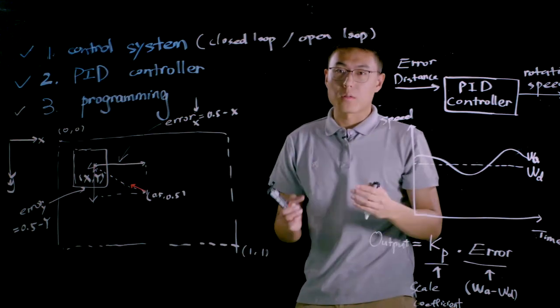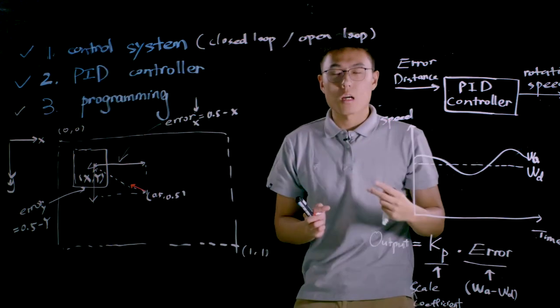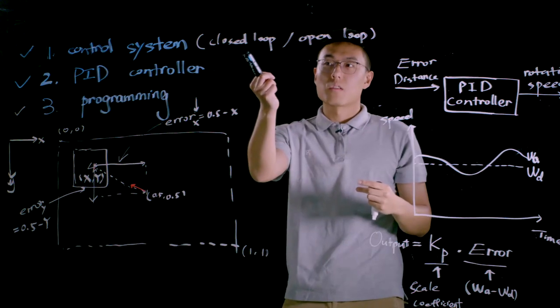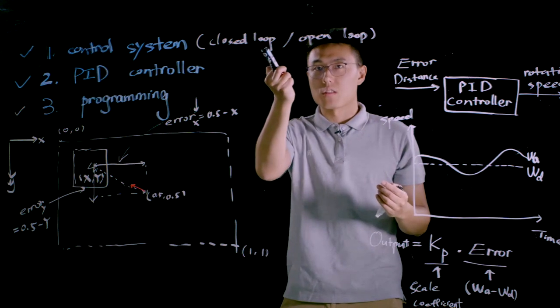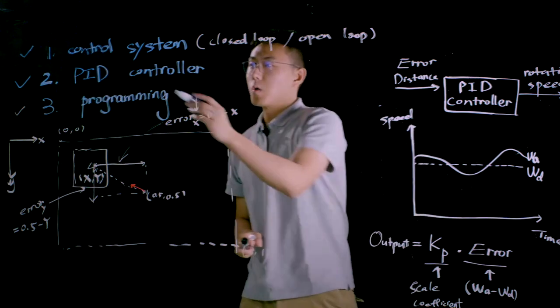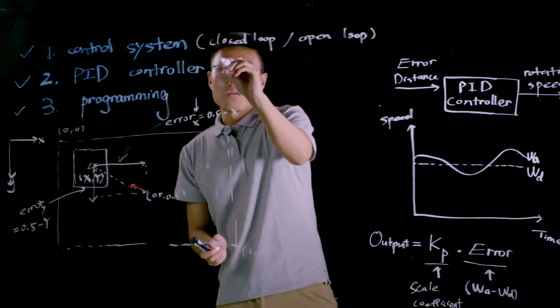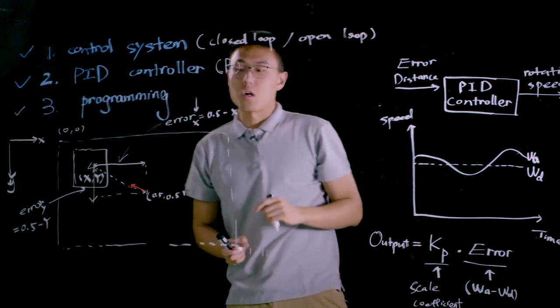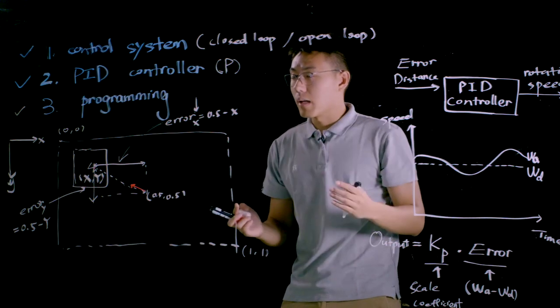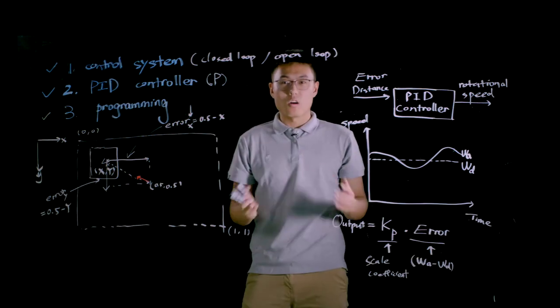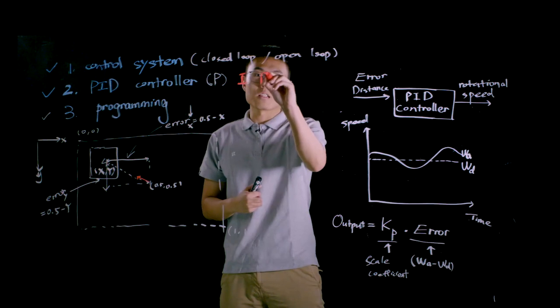Now let's do a very quick recap of today's lesson. First of all we learn what the control system is and we know there are two types of control systems: closed loop control system and open loop control system. Sometimes they are called feedback control system and non-feedback control system. Then we know what the PID controller is. Based on this project, we know how P control or proportional control works. And in the end, we implement the PID controller in the Scratch programming. This is all for today's lesson. In the next video I'm going to show you how to implement I control and D control.